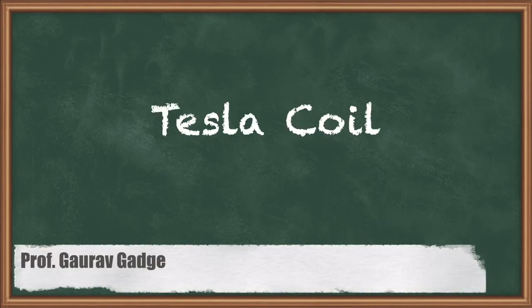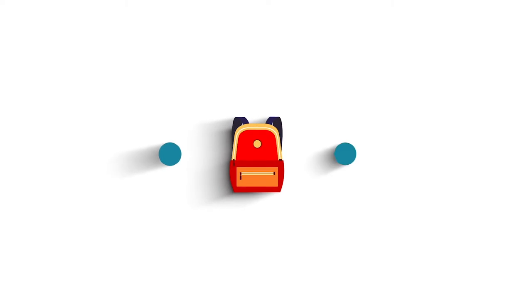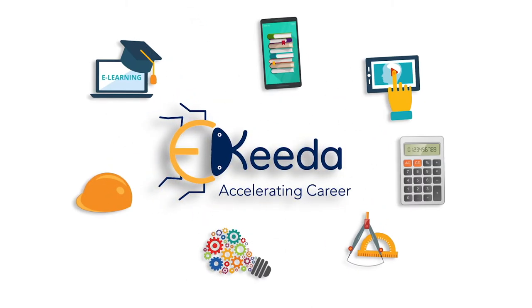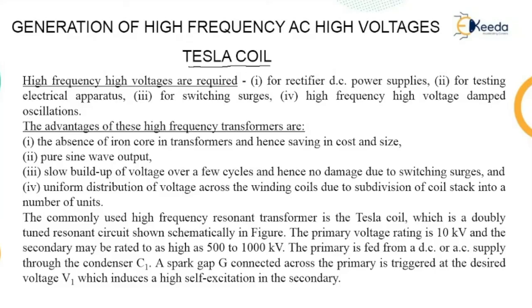Hello friends. Now I am going to discuss our next method of generation of high AC voltage. This particular method is also used to generate high frequency. The name of that particular circuit is called the Tesla circuit, or the coil is referred to as a Tesla coil. The required high frequency, high voltage can be used for rectifier DC power supplies, for testing electrical apparatus, for switching surge, and for damping oscillations.